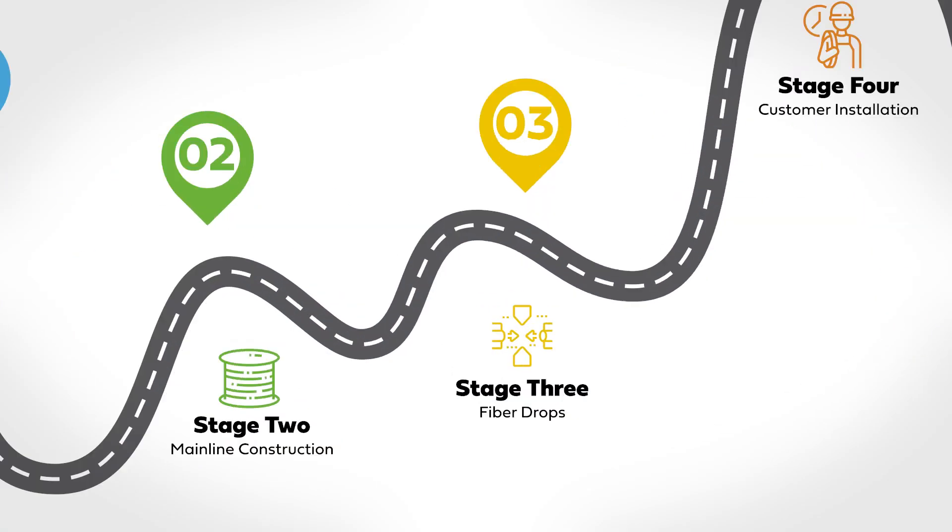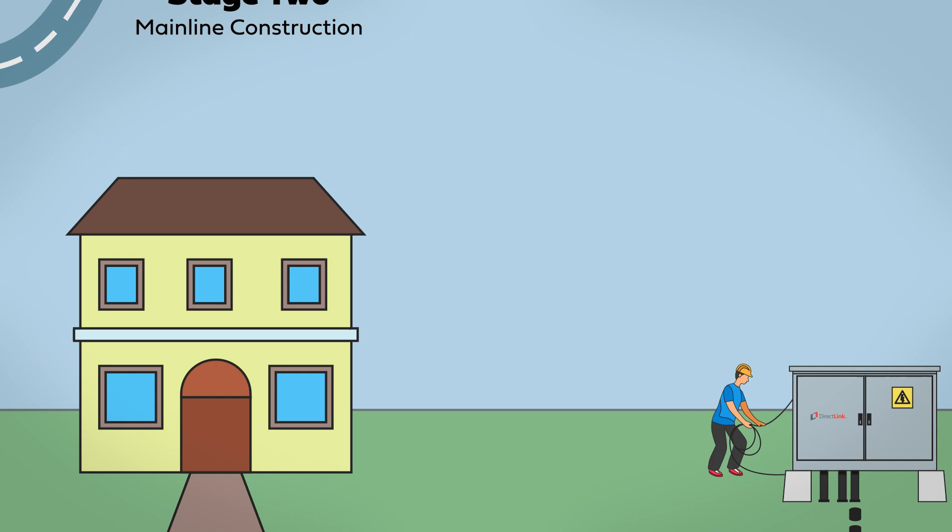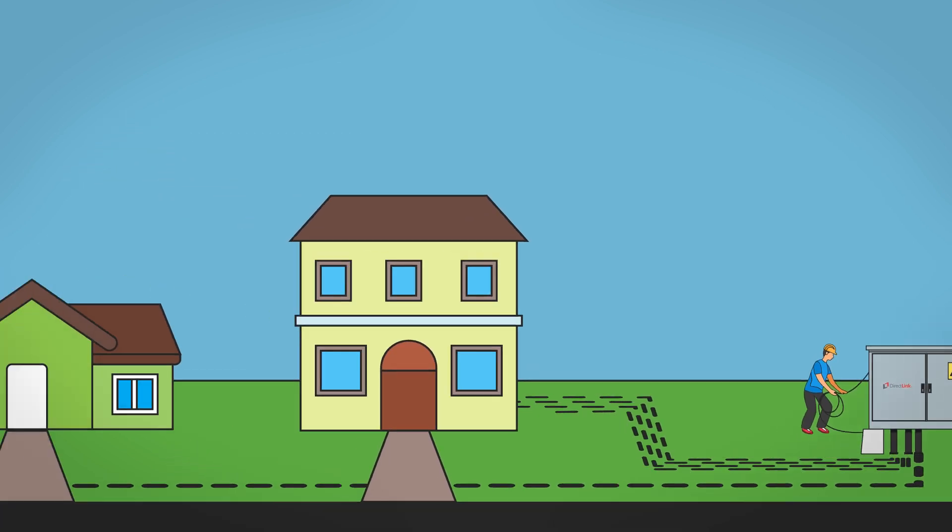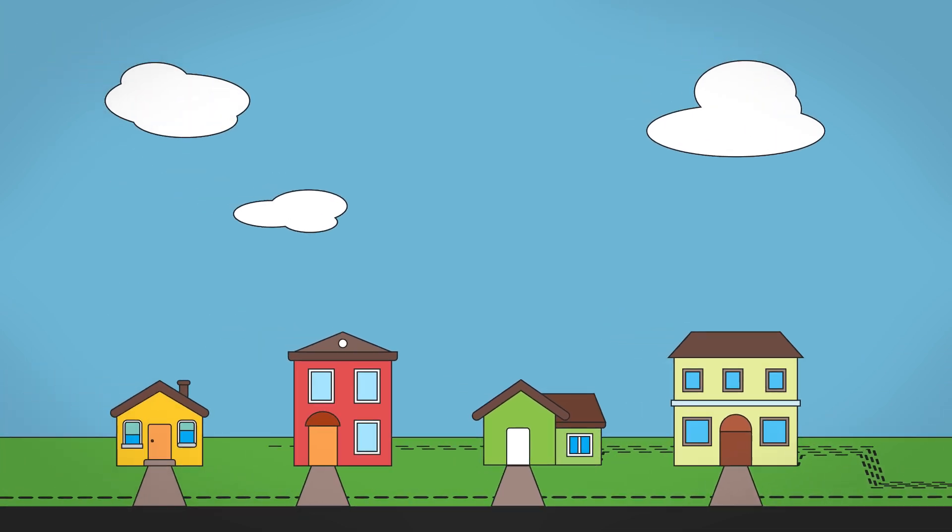Stage three is made up of fiber drops. In this stage, we extend the fiber cables from our network to your home so you can enjoy high-speed internet. Sometimes, this happens at the same time as stage four,